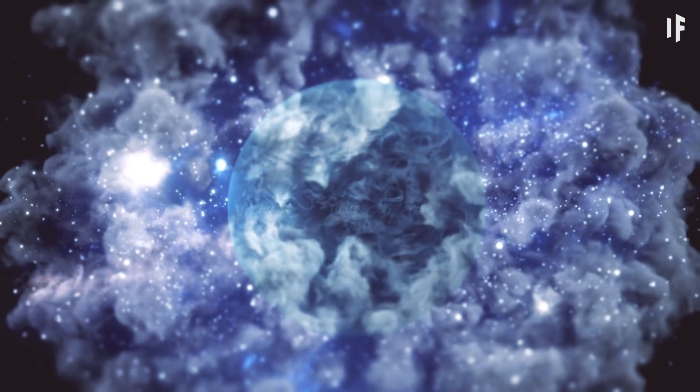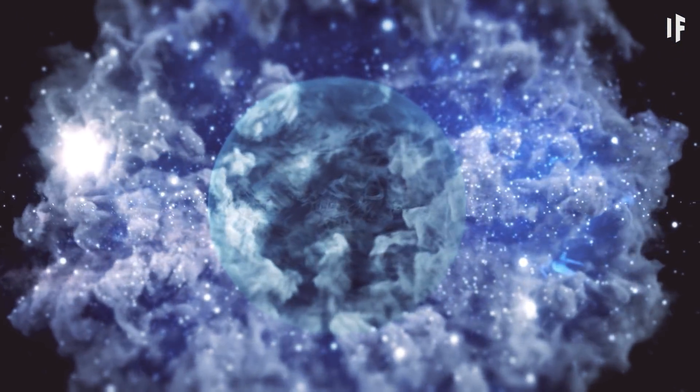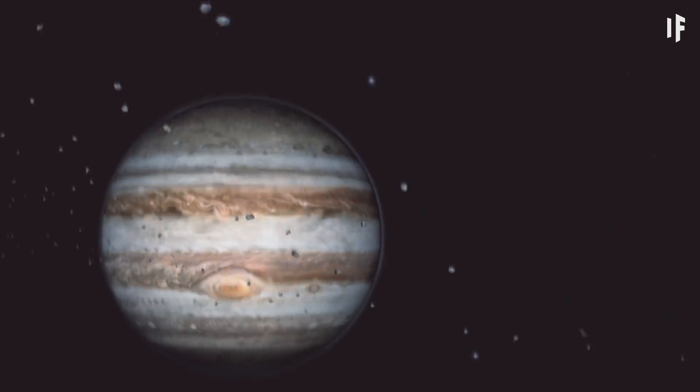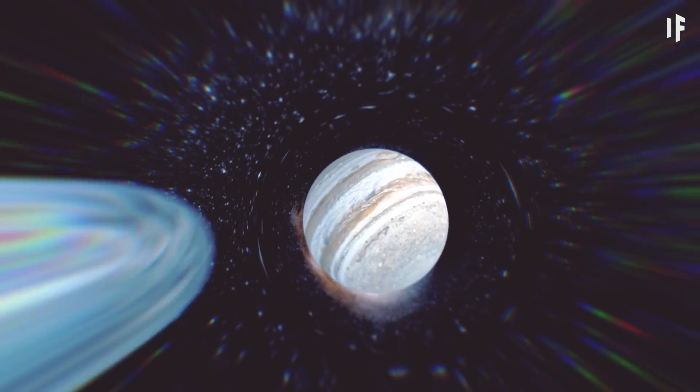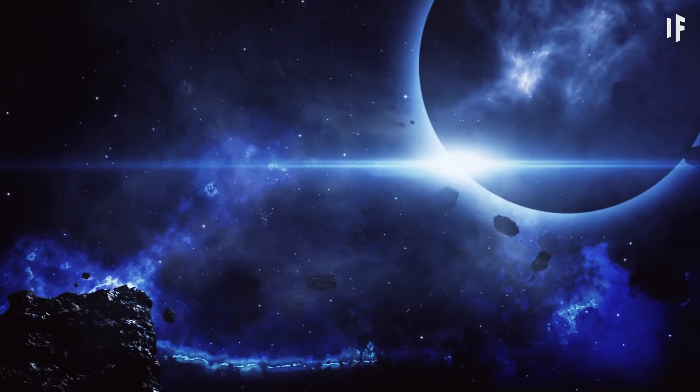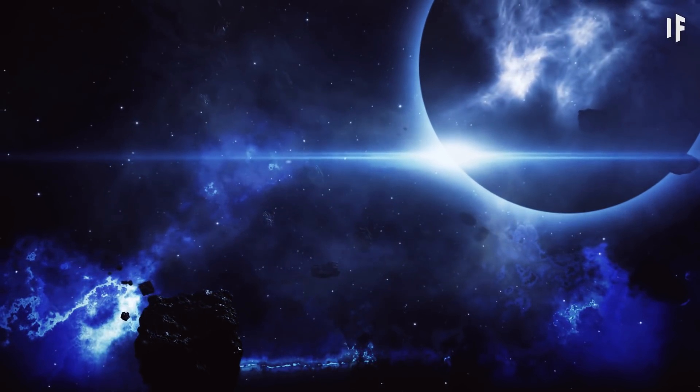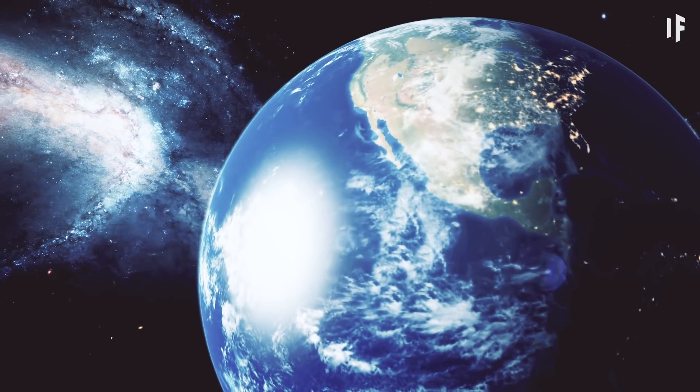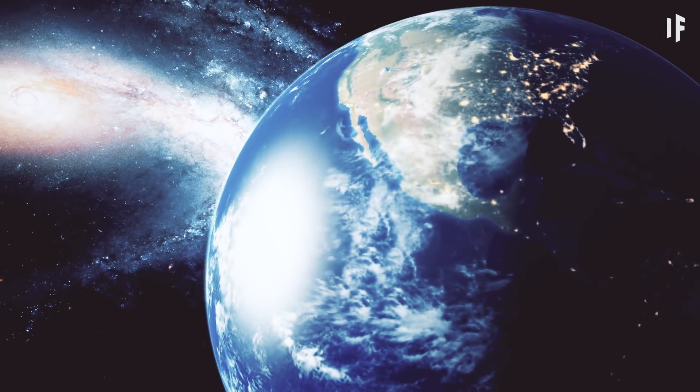And while little baby Planet Nine was feeding and growing, basically attracting gas from the gas disk in the Solar System, it got too close to Jupiter's gravity and bounced out of the Solar System. Because of this, Planet Nine could no longer absorb the gas it needed to continue growing and ended up at a size of about 5 to 15 times the mass of Earth.